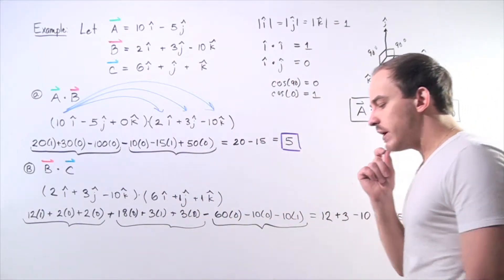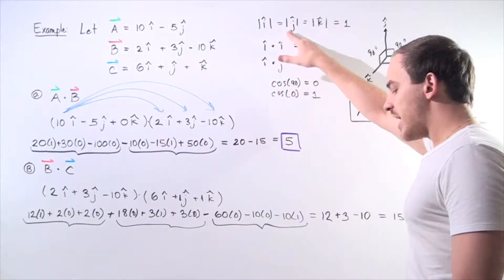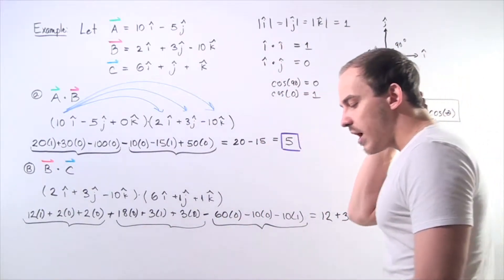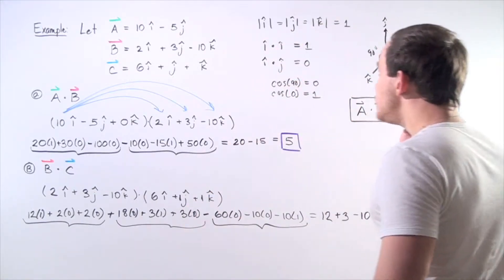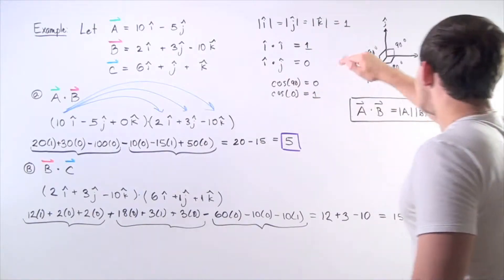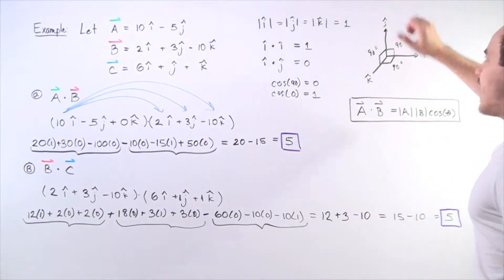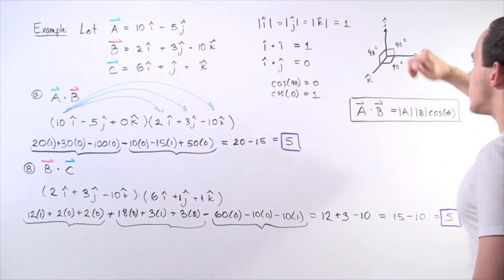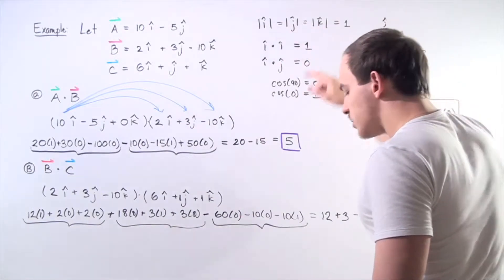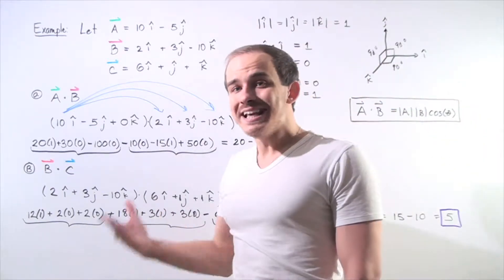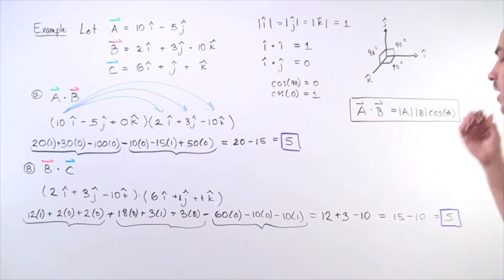By definition, unit vectors have a magnitude of 1. So that means I hat, J hat, and K hat all have a magnitude of 1. Also by definition, vector I hat lies along the x-axis, J hat lies along the y-axis, and K hat lies along the z-axis. That means each one of these vectors lies at an angle perpendicular to one another, at a 90-degree angle to one another.